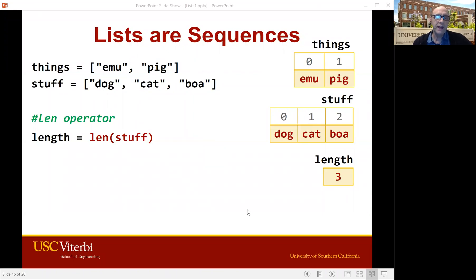We can also use the len function that we saw with strings and ask how long is this list of stuff. So stuff is obviously three items long there. So length equals len stuff will get us a variable length with a value of three in it.